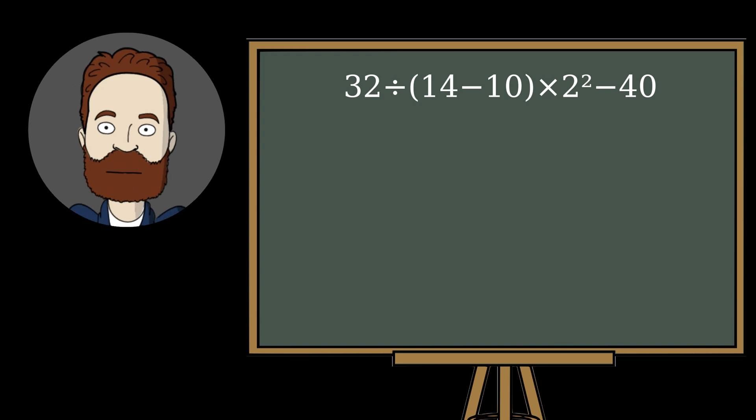All right, so here's our problem. We have 32 divided by 14 minus 10 times 2 squared minus 40.